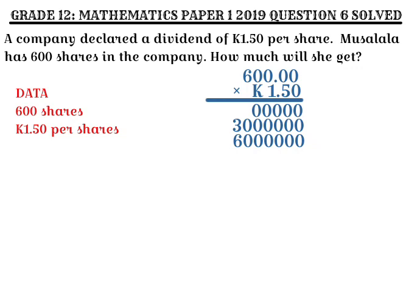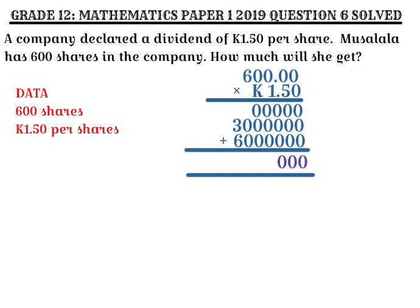Now we are going to add. I'll underline and put the plus sign. We always start adding from the right going to the left. 0 plus 0 plus 0 gives 0 for each column. Then 3 plus 6 gives us 9.